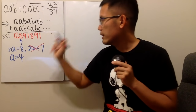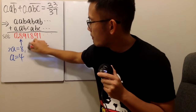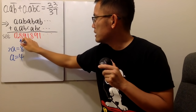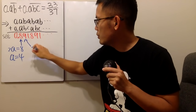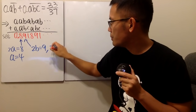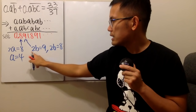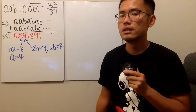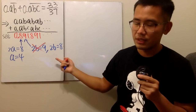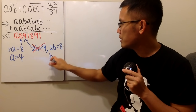Next we look at B plus B equaling 9. So 2B equals 9, or 2B equals 8 if we have a carry-over. 2B equals 9 is not possible since B must be a whole number, so we take 2B equals 8, meaning B equals 4.